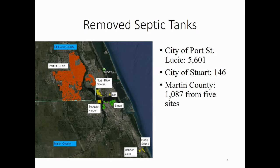Those are locations of the removed septic tanks. The City of Stuart removed about 5,600 septic tanks within the city limit. The City of Stuart also removed 146 septic tanks, and the City of Stuart and Martin County removed 1,087 septic tanks from five sites. Those yellow symbols represent septic tanks removed by Martin County.